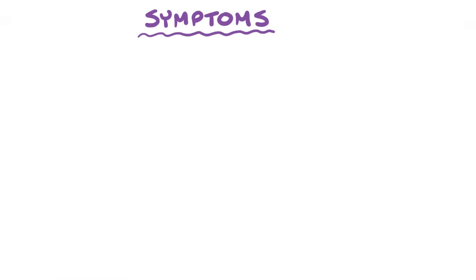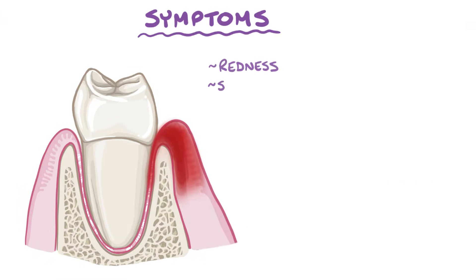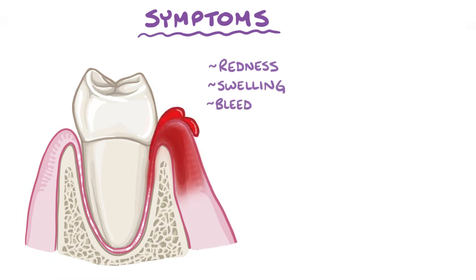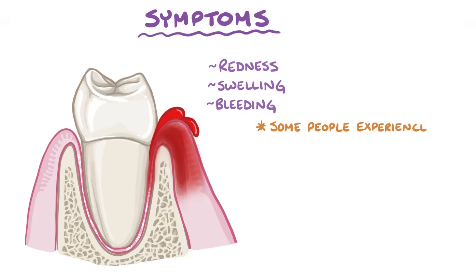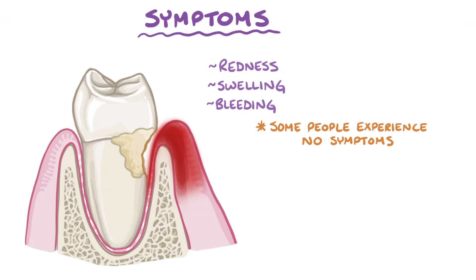Symptoms of gingivitis typically include redness, swelling, and bleeding, especially after brushing or flossing. Some people though experience no symptoms, especially in the early stages of infection. Severe disease that progresses to periodontitis can result in tooth loss.